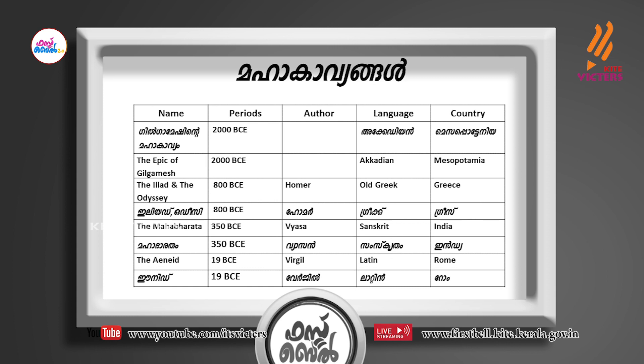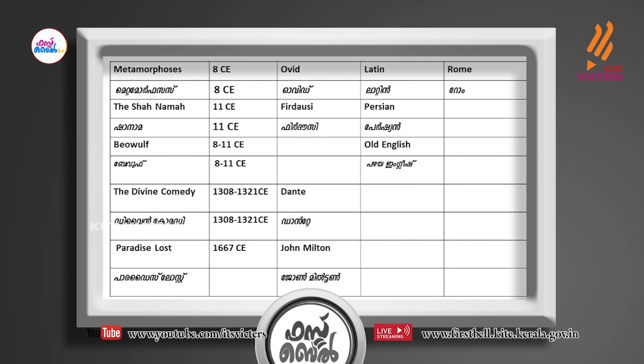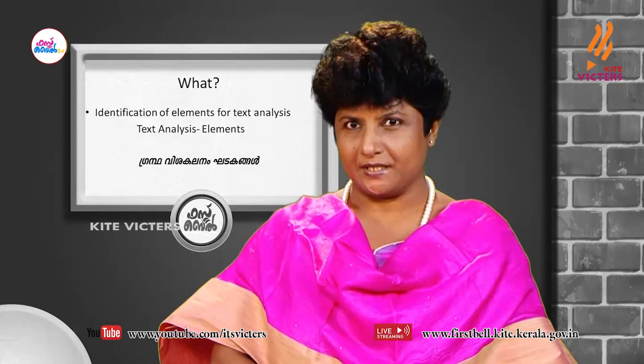Next is the Aeneid, written by Virgil, in Latin. Then Ovid wrote the great epic Metamorphoses. We are also going to deal with Shahnameh, written in Persian. Then Beowulf, written in Old English Anglo-Saxon. Divine Comedy, written by Dante. And Paradise Lost by John Milton.